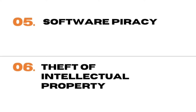Unauthorized copying of software, or software piracy, is an effective form of software theft, common with Apple Computer, IBM, Intel, and Microsoft software. Unauthorized copying is illegal because software is intellectual property protected by copyright law. Intellectual property theft also occurs through infringement of copyrighted material such as music, videos, images, articles, books, and other written works, without proper consent from the original owner.